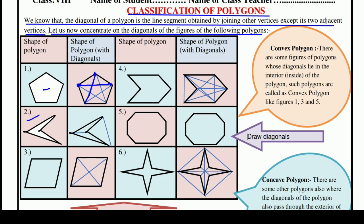Now second figure is also a polygon, और इसके जो diagonal है — एक diagonal तो आपने देखा इसका inner point वाला, और एक ये बाहर भी join हो रहा, ये भी diagonal है। Then third figure is a quadrilateral, और ये एक polygon है, और इसके diagonals ये रहें, लेकिन वो अंदर ही हैं। Fourth shape में अगर आप देखें, तो इसके diagonal बाहर भी आ रहे हैं।